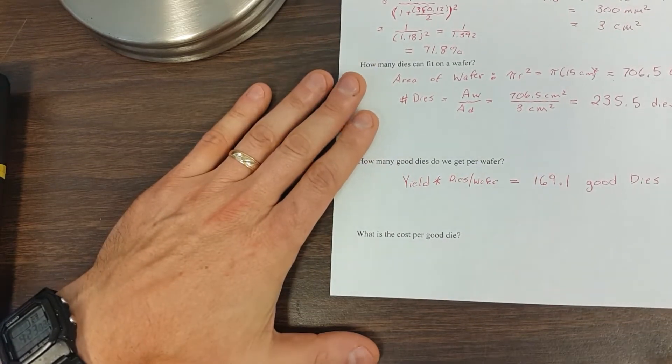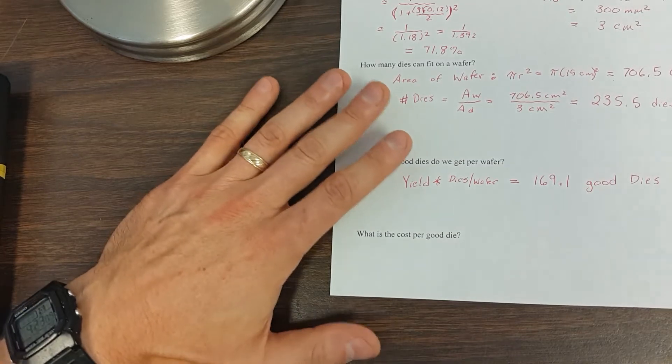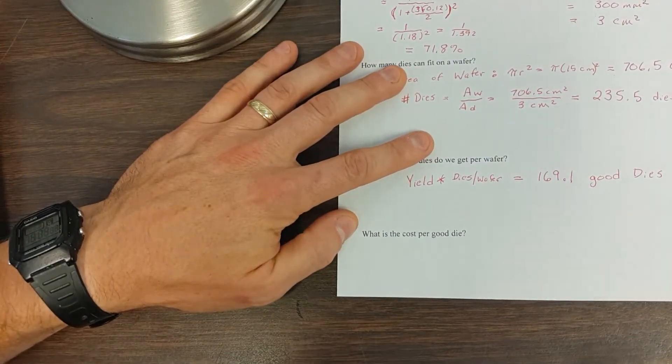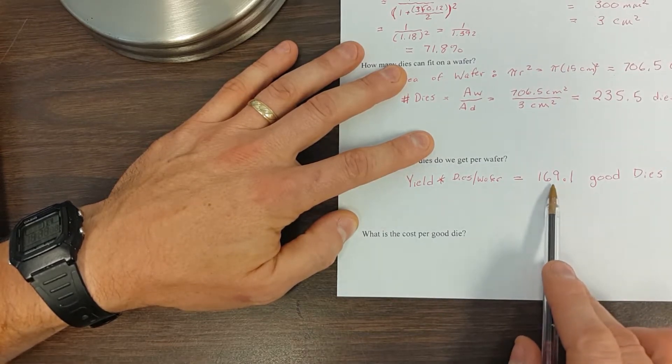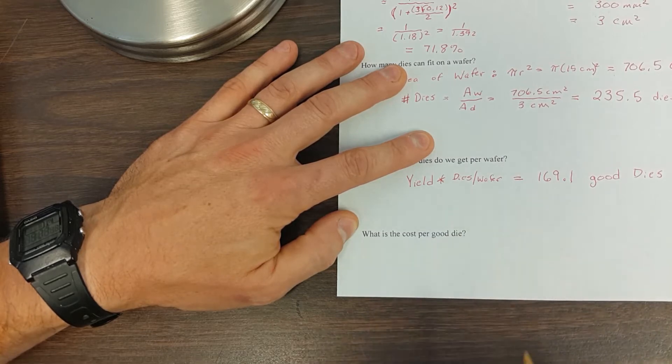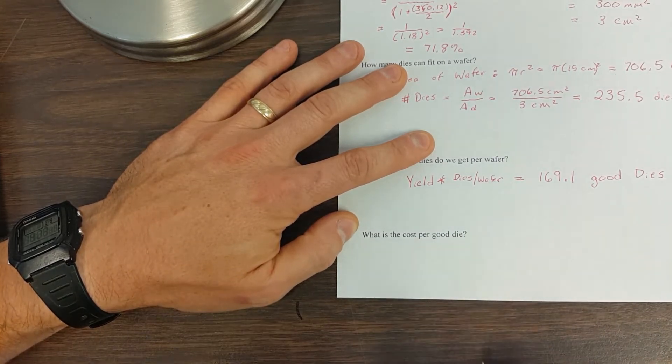Finally, we've got what is the cost per good die? Well, in here, we need to know how much the wafer costs first, because if we know how much the wafer costs and we know how many dies we get, we can divide. But we haven't yet calculated what the cost per wafer is.